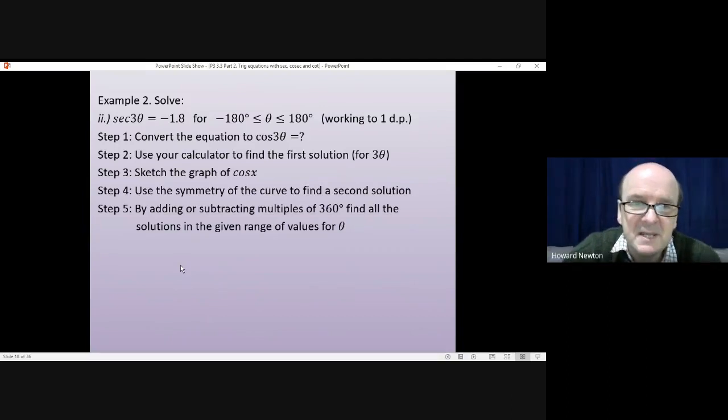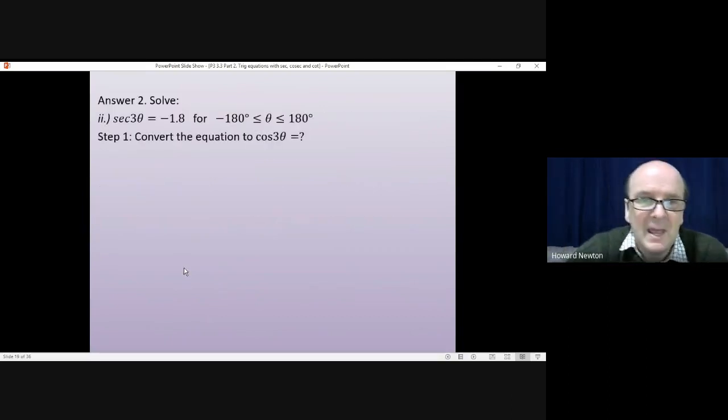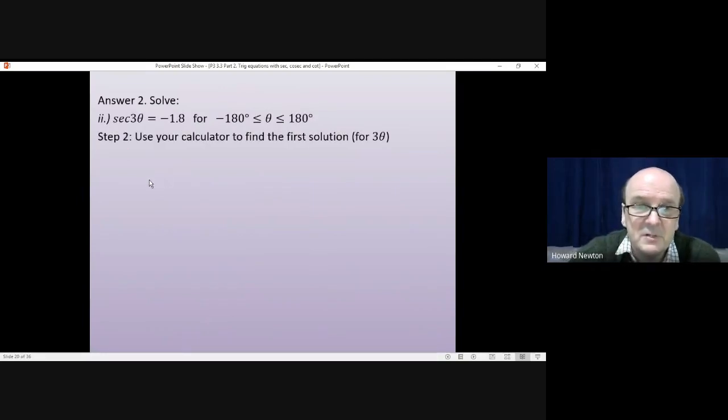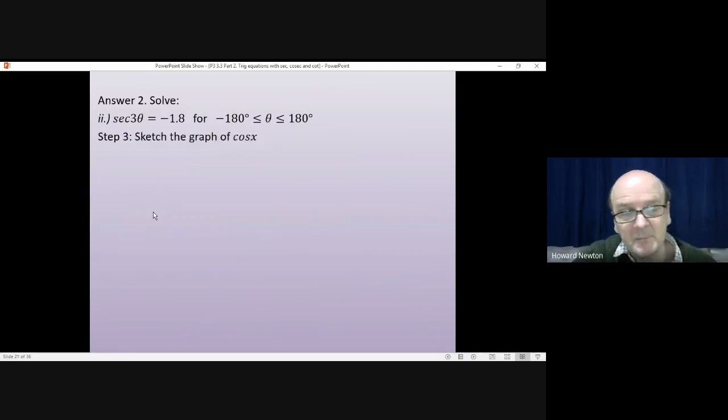Okay. We'll have a look at this together. So that was the question. And the first thing that we said we had to do was convert sec to cos because you can't do inverse sec on your calculator. Well, 1 divided by sec 3θ is cos 3θ. 1 divided by minus 1.8 will give me minus 0.555. Now it's a normal question. So from here on, you just use the standard method. Step 2 is using a calculator to find the first solution. So you do inverse cosine of minus 0.5555. And when you do that, you'll get 3θ could equal 123.7 degrees. Don't divide by 3. Just leave it as 3θ for the time being.